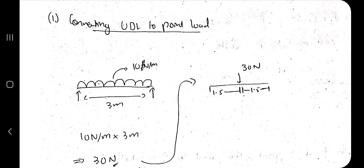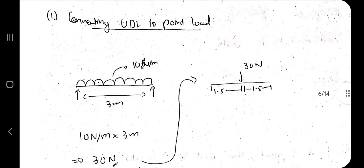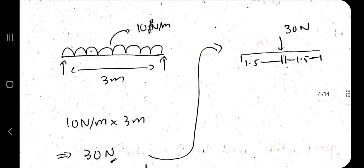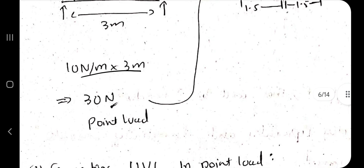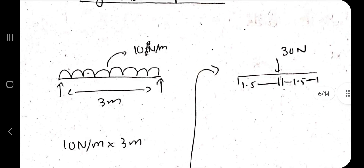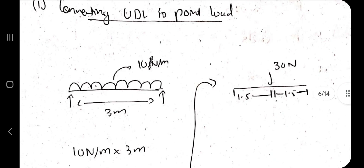To convert a UDL into a point load: suppose there is a uniformly distributed load of 10 N/m over a length of 3 meters. The total force acting is 10 × 3 = 30 N. This resultant force acts exactly at the middle of the distributed load — 1.5 m from the left and 1.5 m from the right. That's how you convert UDL into a point load.